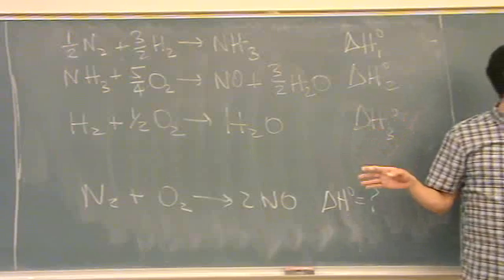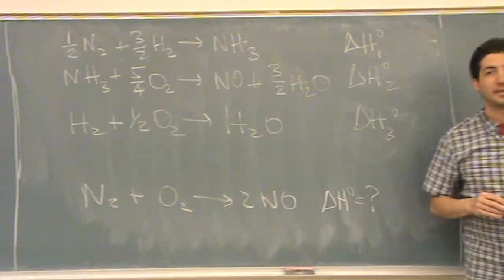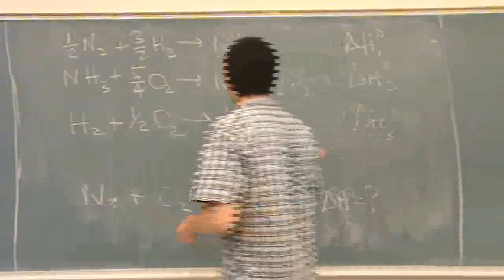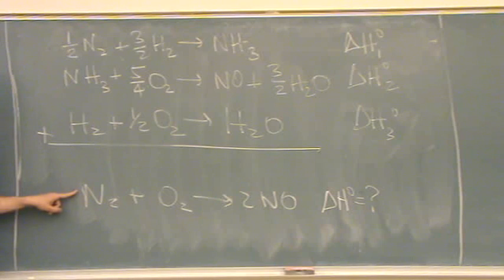You also will want to check, is everything balanced? Because we might give you all the reactions and they're not balanced at all. So what you're going to do, again, these three have to add up to this one. So you need to manipulate these.